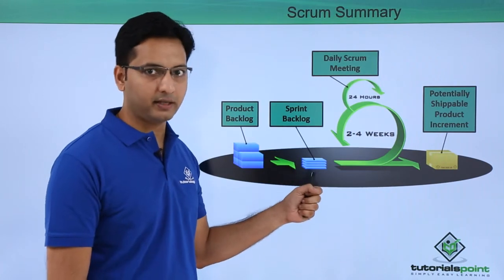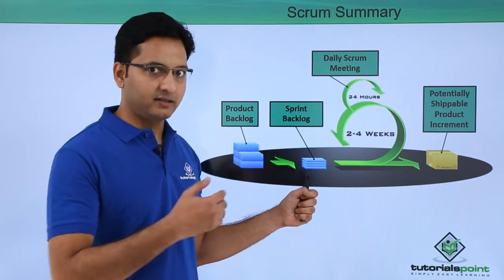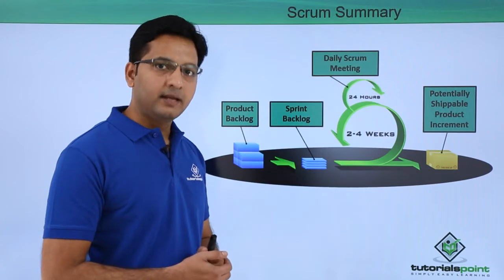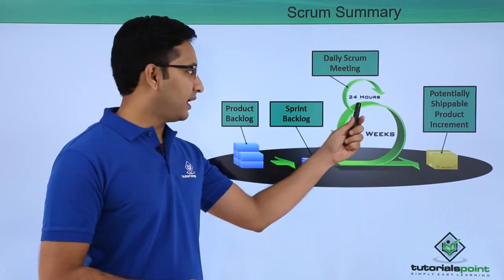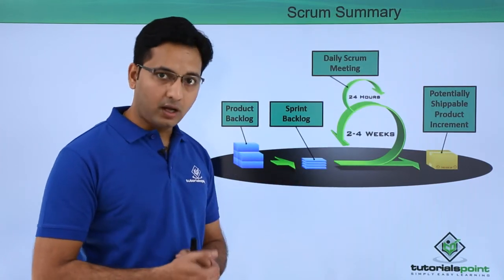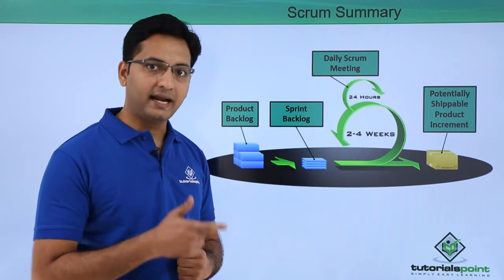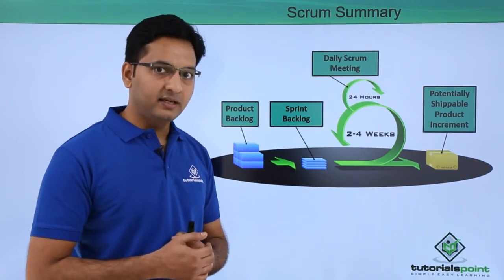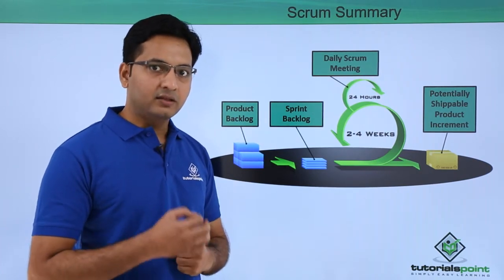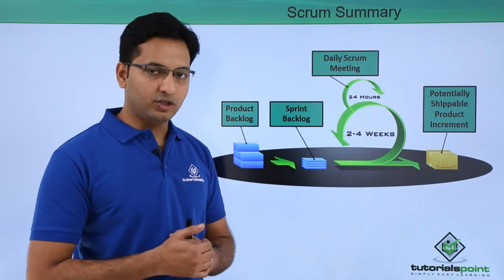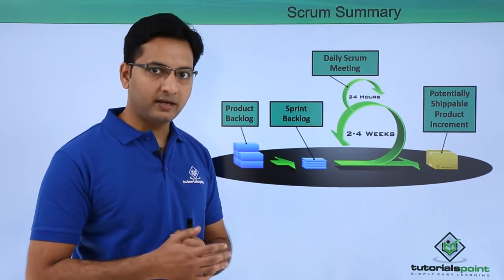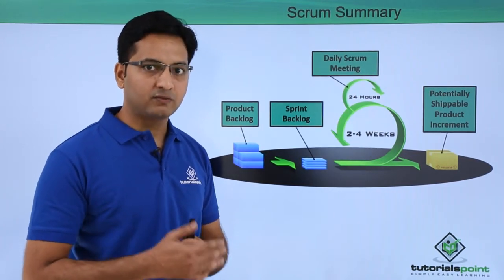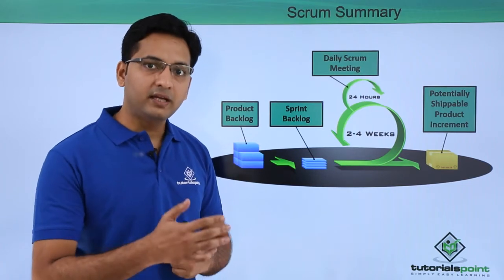Once the sprint backlog is created and the sprint has started, there is a daily Scrum meeting. The daily Scrum meeting happens every 24 hours at the same place and at the same time. In the daily Scrum meeting, there will be use of the sprint burn down chart to understand the progress and forecast what will be done or whether there will be any hurdles completing the work.